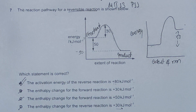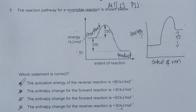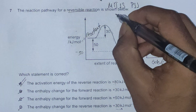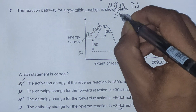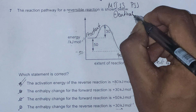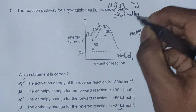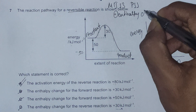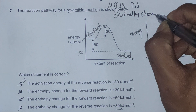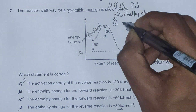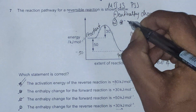For energy diagrams, two key pieces of information to note are: first, the enthalpy change, and second, the activation energy.